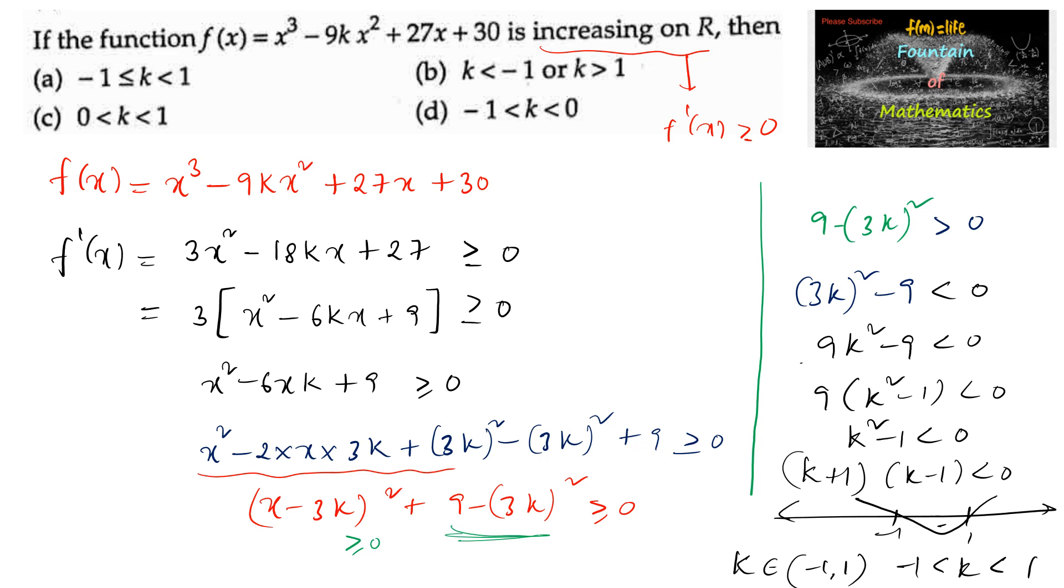So we can go with option (a): -1 < k < 1. We can even include 1 also.